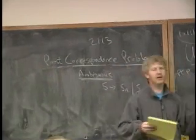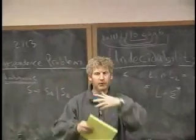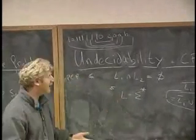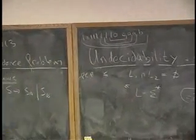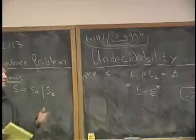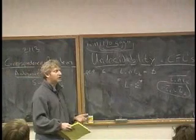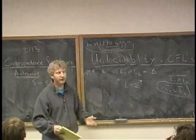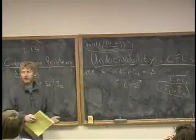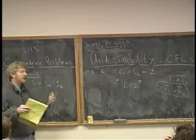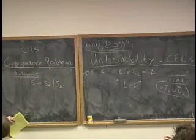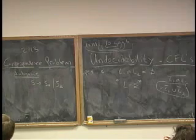What if I give you a context-free language and I ask you, I give you a grammar. It generates something. And I ask you, hey, does this happen to be a regular set? Could you have done better? Could you have made a finite state machine for this? Did you really need the deterministic pushdown machine that you used? Or the context-free grammar? Is it really a simpler language? I give you a context-free language. Is it also a regular set? Do you think that's a hard problem or an easy problem to decide?